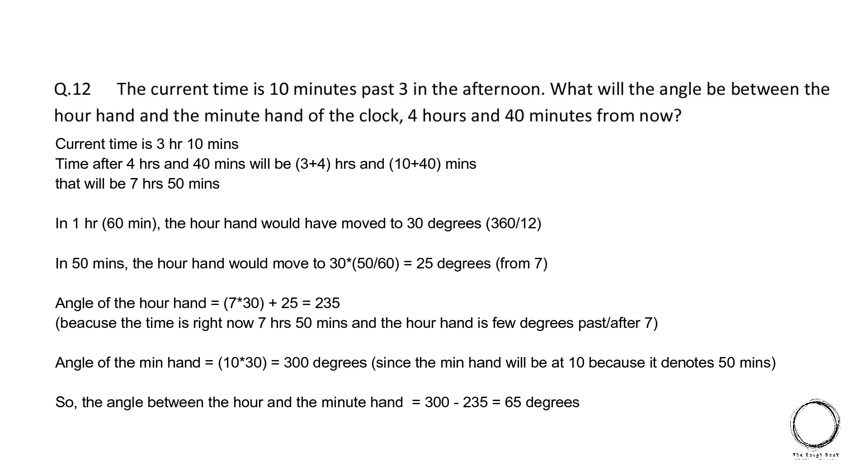Next, in 50 minutes, the hour hand would move 30 into 50 by 60, which equals to 25 degrees from 7. Angle of the hour hand equals to 7 into 30 plus 25 equals to 235. Because the time right now is 7 hours 50 minutes and the hour hand is few degrees past 7. Angle of the minute hand equals to 10 into 3, which is 300 degrees. Since the minute hand will be at 10 because it denotes 50 minutes. So the angle between the hour hand and the minute hand equals to 300 minus 235, that equals to 65 degrees. So the answer is 65.